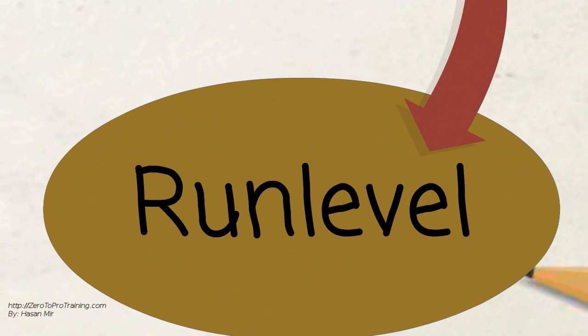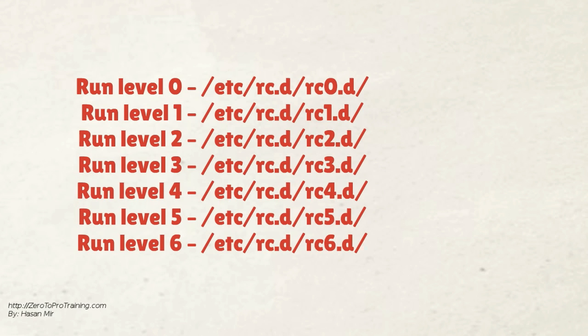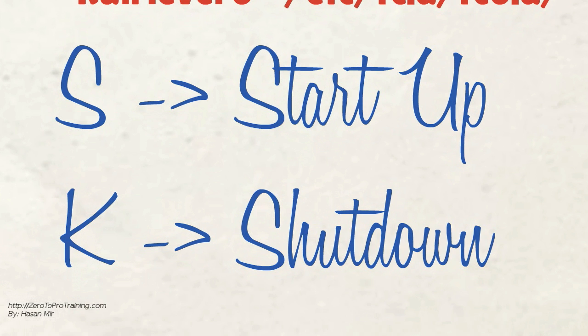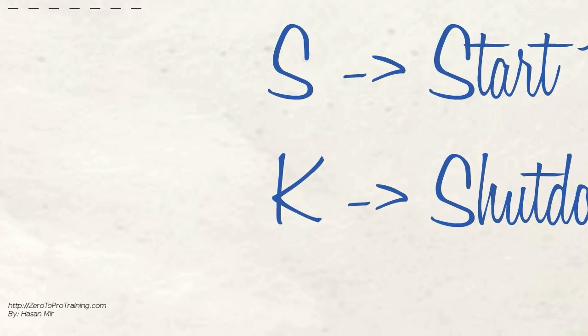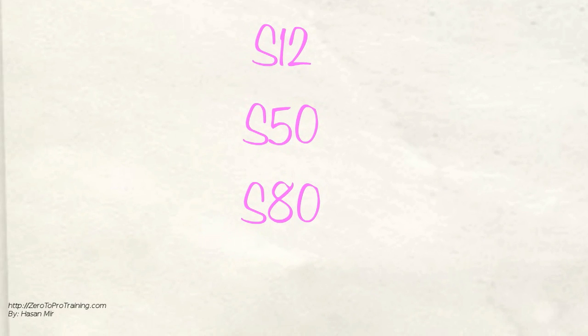Let's talk about run level. The system executes programs depending on the current run level. There are directories for each run level, and programs residing in the directory associated with the current run level are executed. Programs starting with S are used during startup — S for startup. Programs starting with K are used during shutdown — K for kill. There are numbers next to S and K in the file names, which indicate the sequence in which the programs should be started or killed.